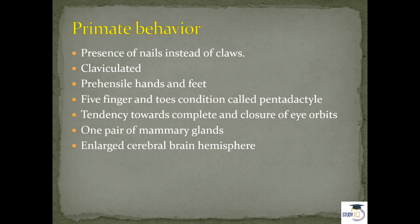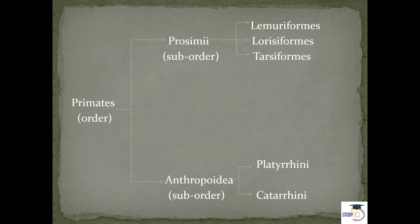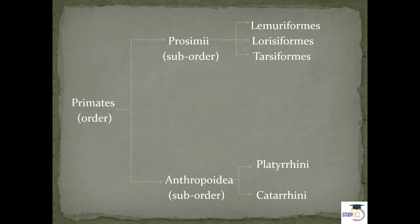Order Primate is further divided into suborders and infraorders. As shown in the previous lecture on human classification in the animal kingdom, the primate order is divided into two suborders: Prosimii and Anthropoidea. Prosimii is further divided into three infraorders: Lemuriformes, Lorisiformes, and Tarsiiformes. Anthropoidea is divided into Platyrrhini and Catarrhini. Under these infraorders we will discuss the living species of the primate order.